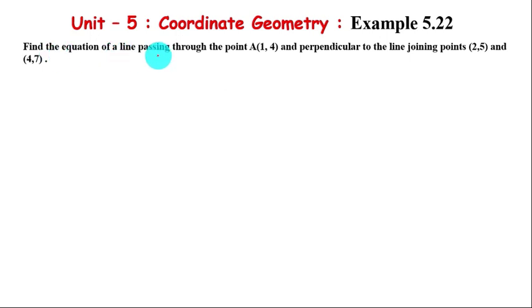Find the equation of a line passing through the point A(1,4) and perpendicular to the line joining the points (2,5) and (4,7).